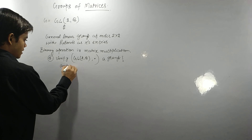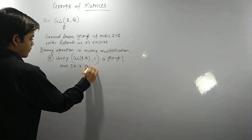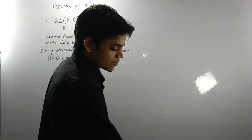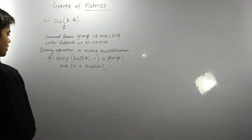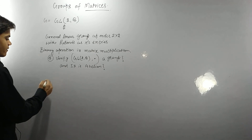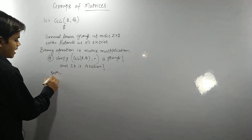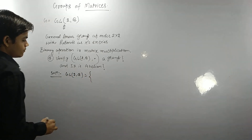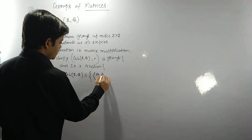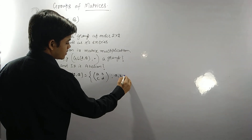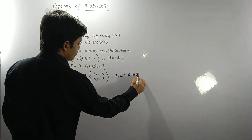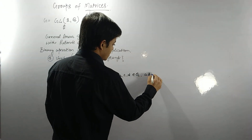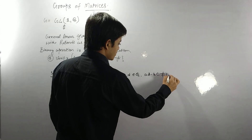Two questions are posed: is GL(2,Q) a group, and is it abelian? GL(2,Q) can be written as the set of matrices of the form [A B; C D] such that A, B, C, D belong to Q, and AD minus BC is not equal to zero.